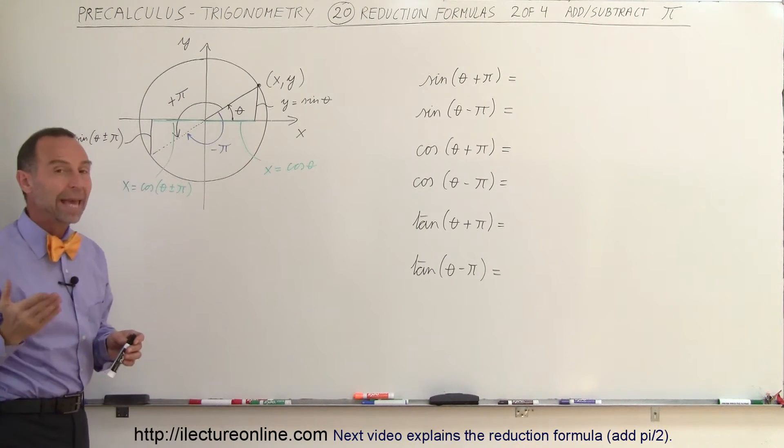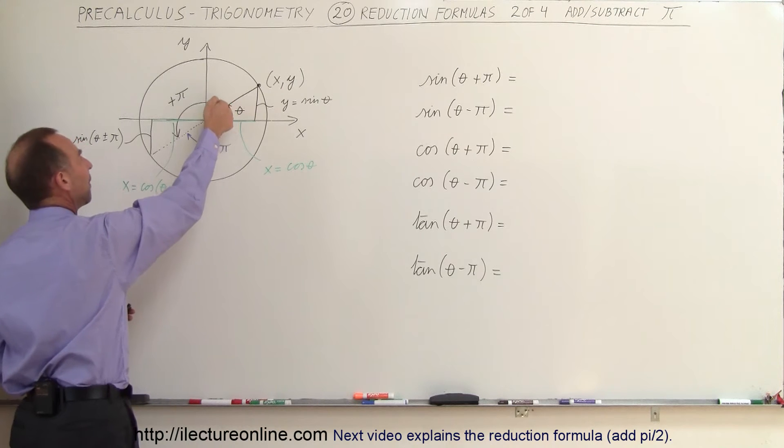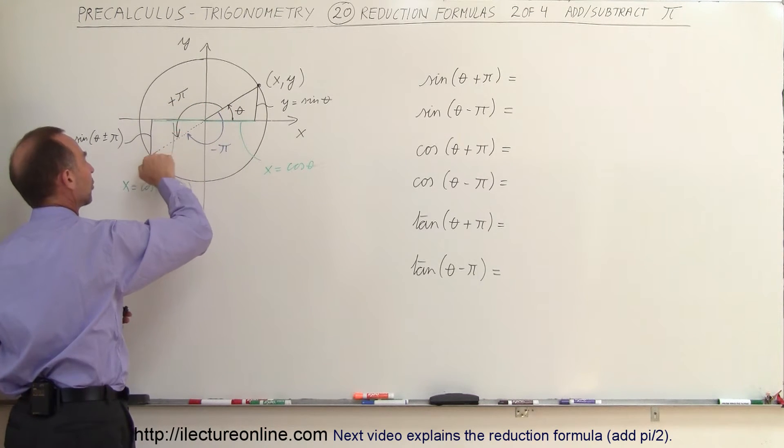So what happens when we add a pi? A pi is 180 degrees, so if we add a pi that brings us up to the other side of the circle and that gives us the point xy right over here.